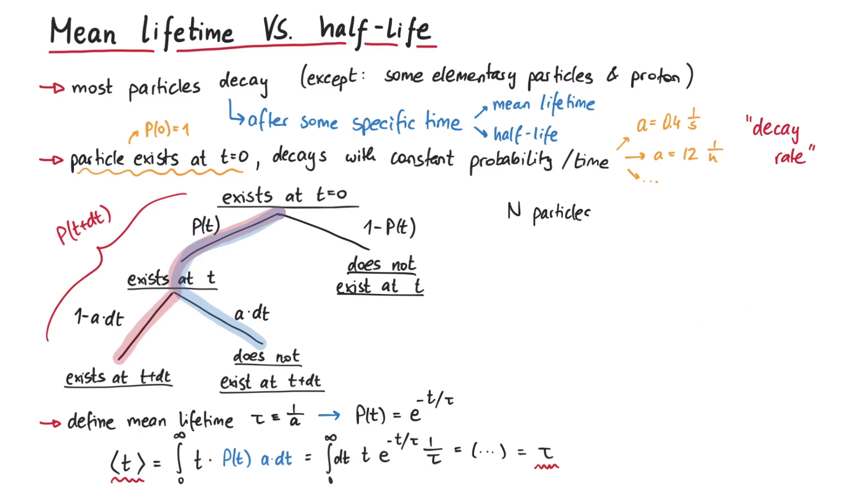One more thing, if we start with n particles, then after the time tau only 37% of them remain, so 63% of them decay. We can now ask, how long does it take until half of them, so 50% decay? Surely this time must be shorter than the mean lifetime, since at the mean lifetime already 63% decayed. The quantity that we are looking for is called half-life and is usually denoted with t with an index one half.